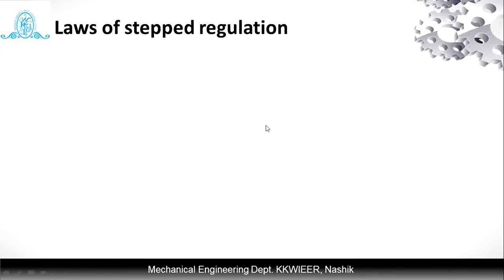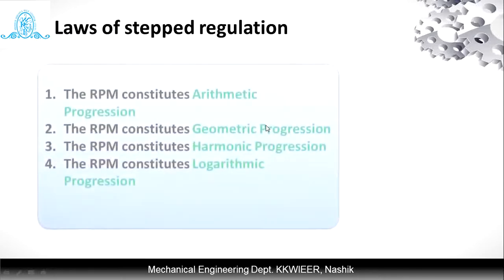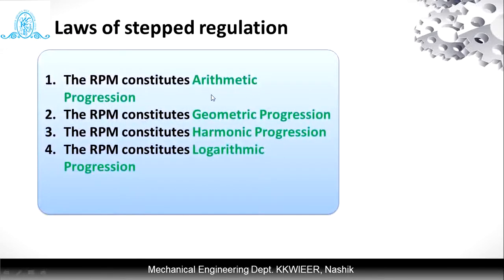To classify all the speeds, we follow a few laws for stepped regulation. There are four laws: first, arithmetic progression; second, geometric progression; third, harmonic progression; and fourth, logarithmic progression. We will follow these four laws to obtain different types of speed steps.